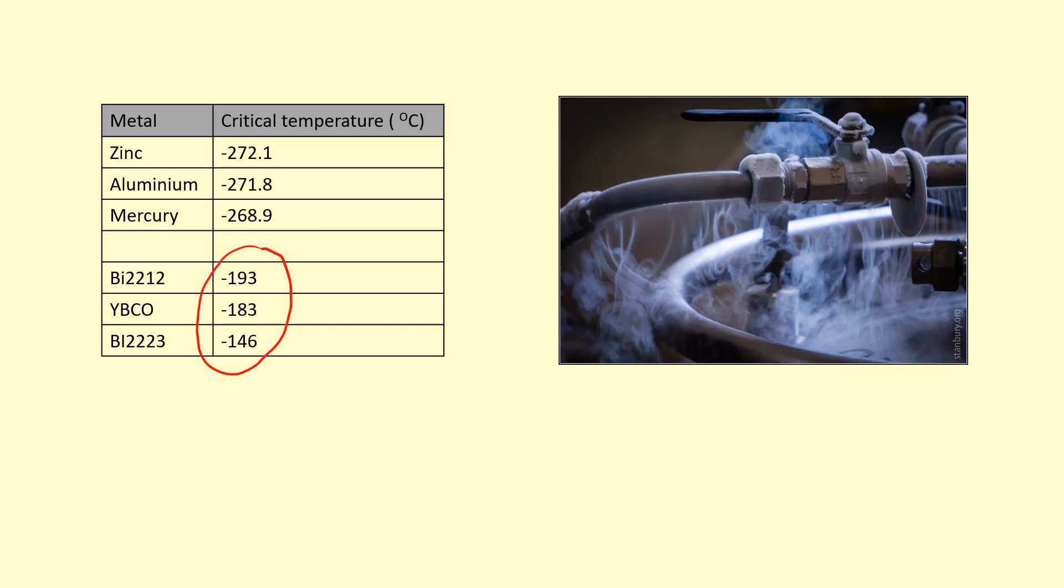For these ones here, which are slightly higher temperature but still extremely cold, you need liquid nitrogen. So, superconducting materials have lots of advantages, but one of the disadvantages with them is that they need to cool down to very low temperatures, which obviously means it's going to be expensive and will require a lot of insulation.